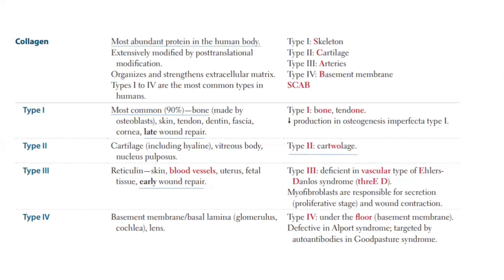Alport syndrome is hereditary nephritis. There is a triad: first, the patient is affected by anterior lenticonus because it affects the lens — remember A4: Alport and Anterior Lenticonus. Second, the patient is affected in the basement membrane of the glomerulus. Third, the patient also suffers from SNHL — sensorineural hearing loss. Please read this table in your last part of revision. First, collagen is extensively modified by post-translational modification due to Vitamin C. Second, the different types of collagen and their associated organs. Third, if decreased, what deficiencies and disorders occur. This table is the most important table — one sure shot question will come from it.